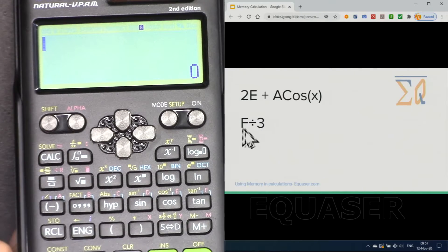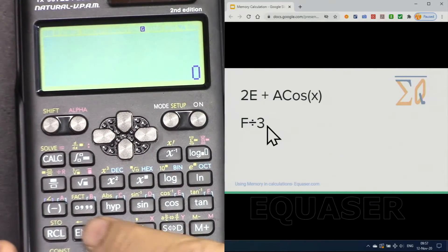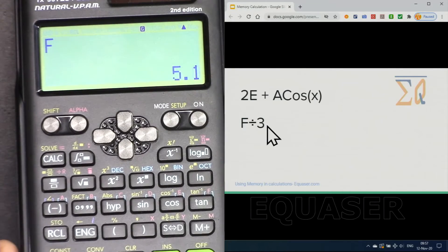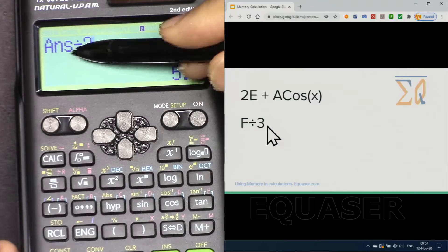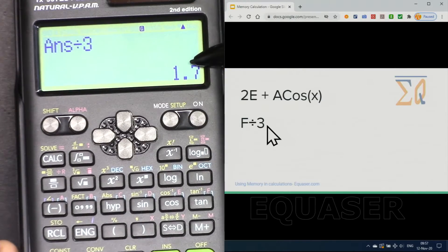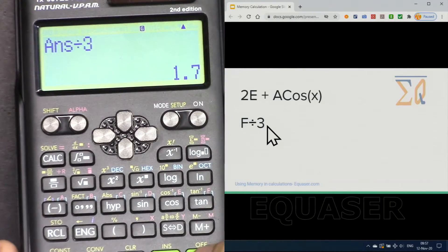If you want to do F divided by 3, recall F divided by 3. Now pay attention it changed to answer divided by 3. The answer is correct but if you want to prevent it here is how we do it.